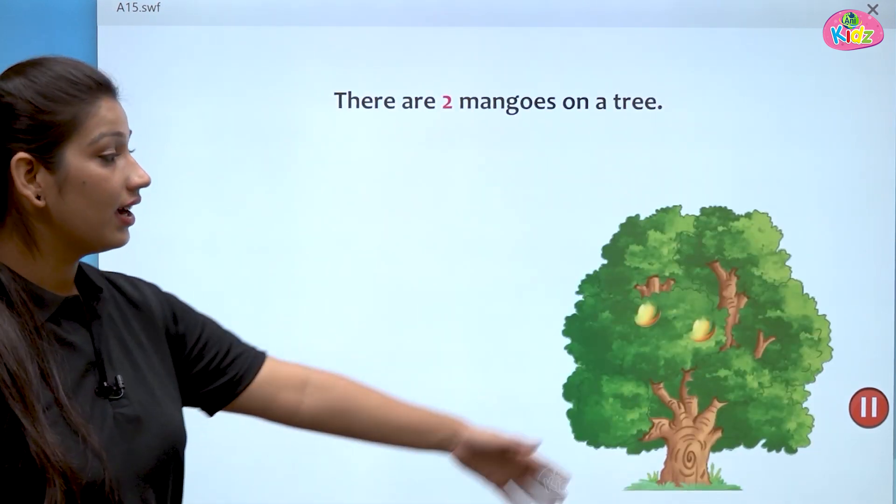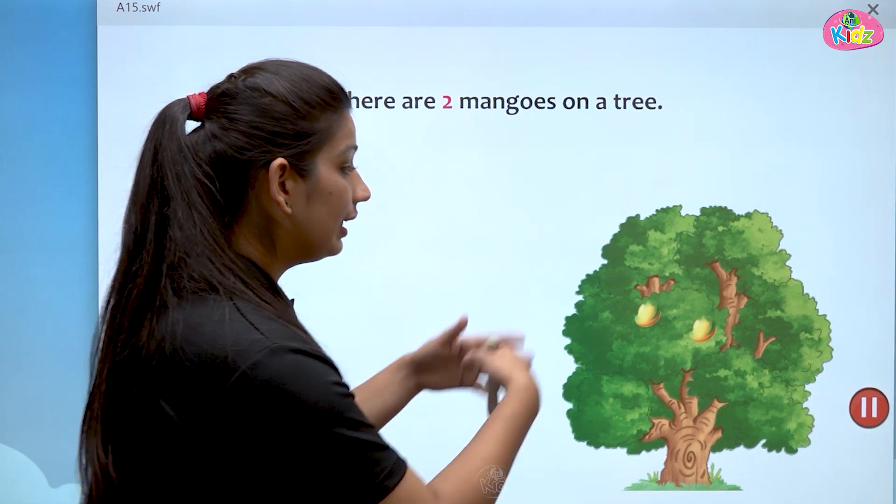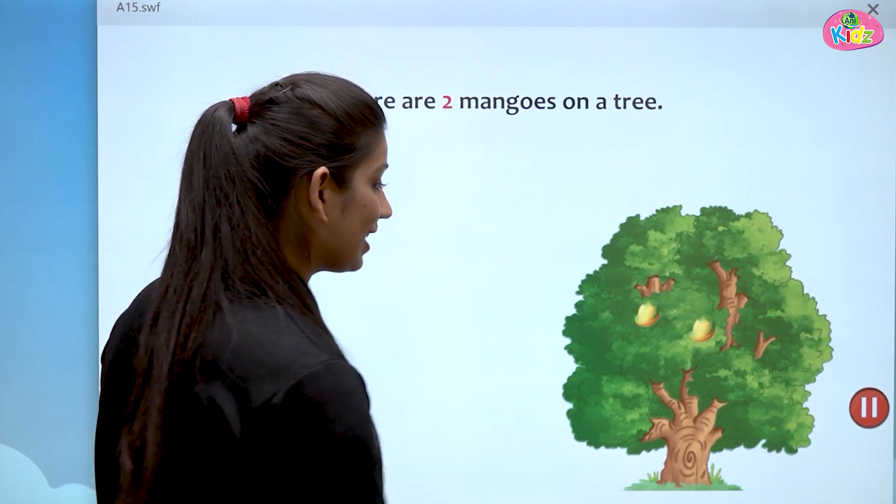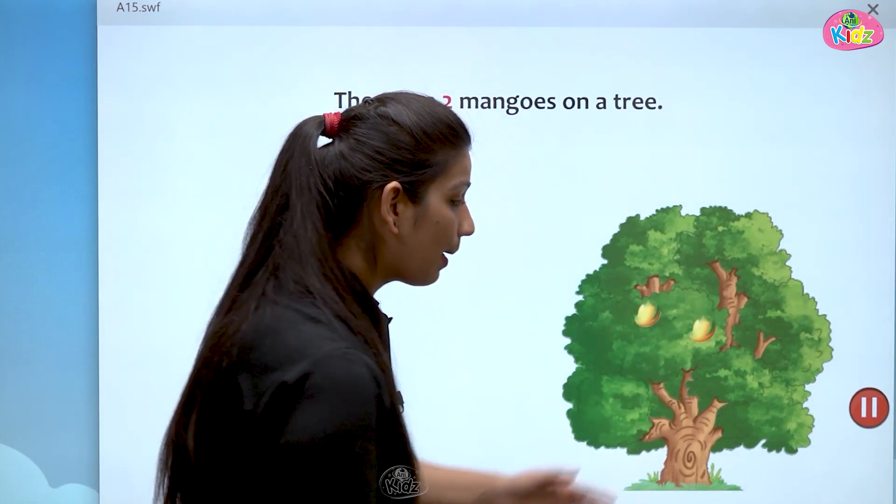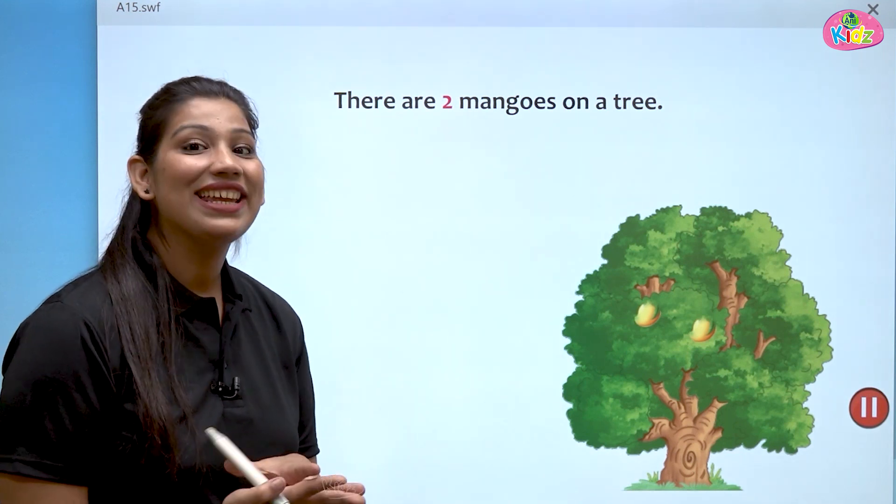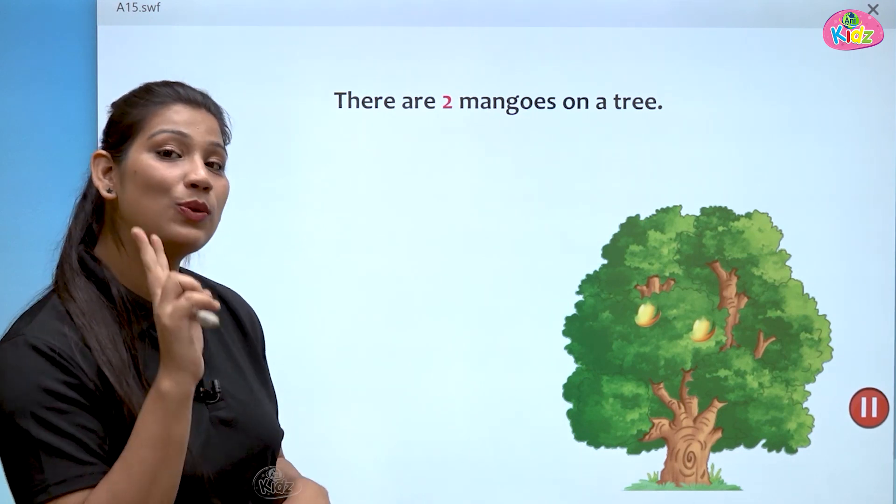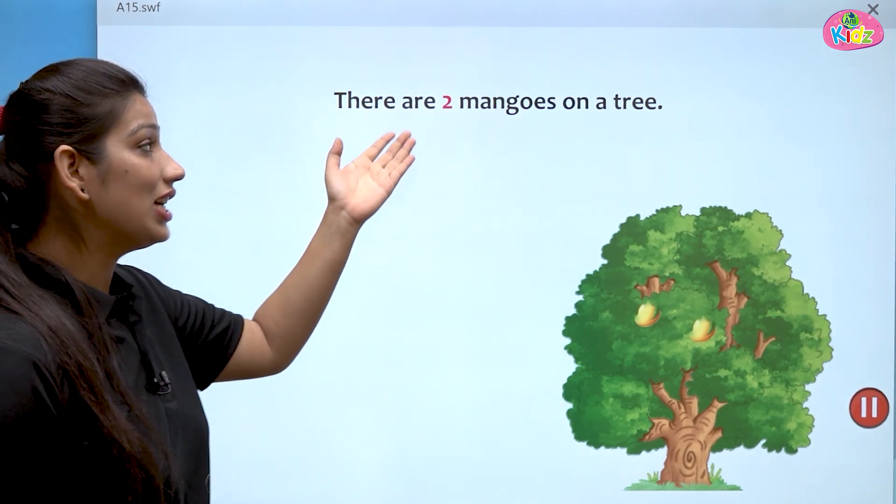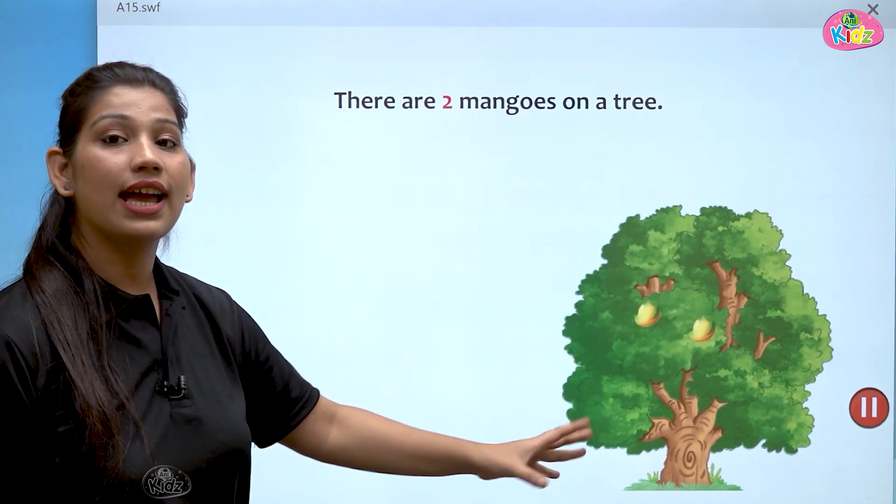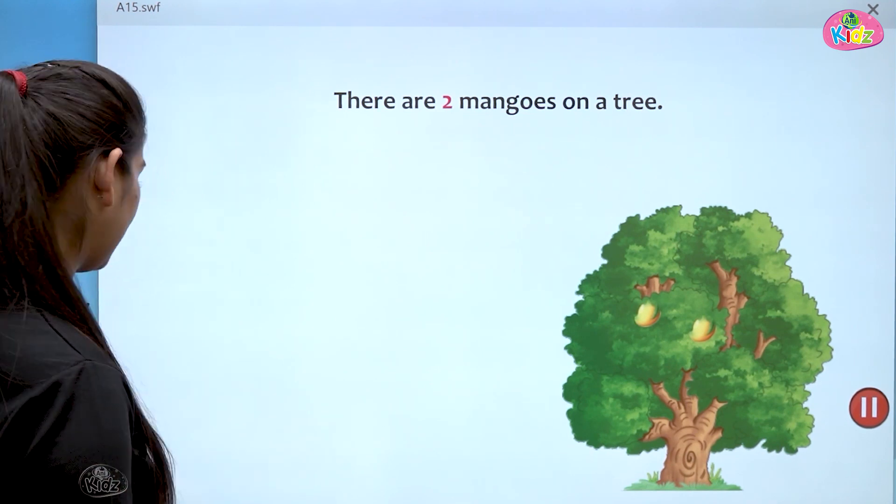Here, you can see a tree. You all can see a tree. This big tree has mangoes. Yes, this tree has mangoes. How many mangoes are there on the tree? Yes, one, two. There are two mangoes on the tree. This is a tree and it has two mangoes. Let us see what happens next.